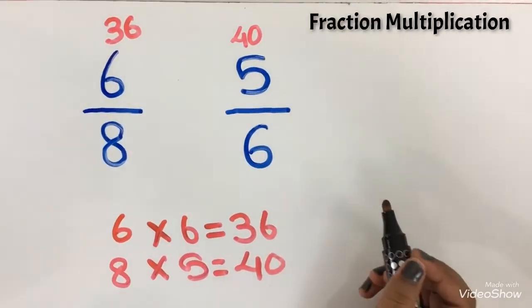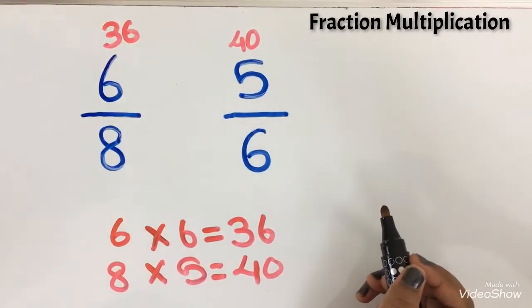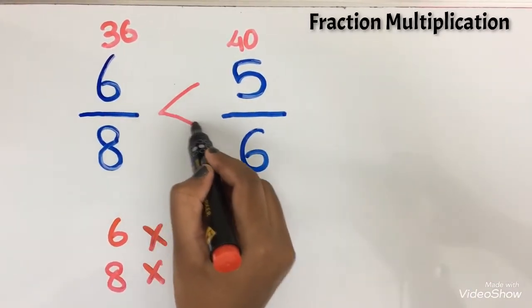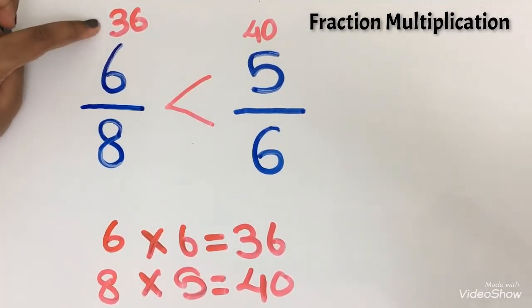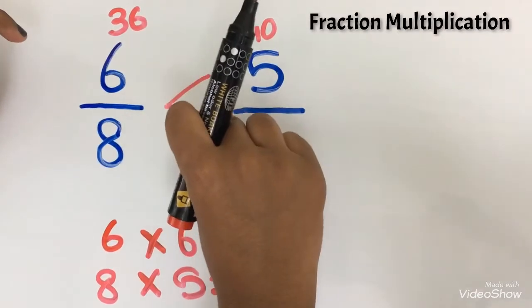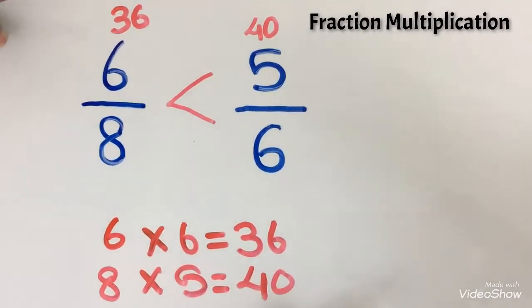Which is bigger? 36 or 40? 40 is bigger. So 5 by 6 is bigger. 36 number is less. So we have to put the less than symbol. See how easy it is.